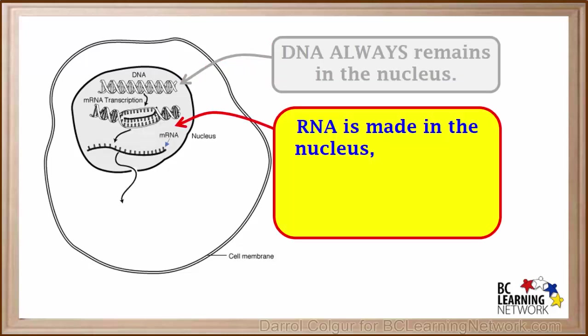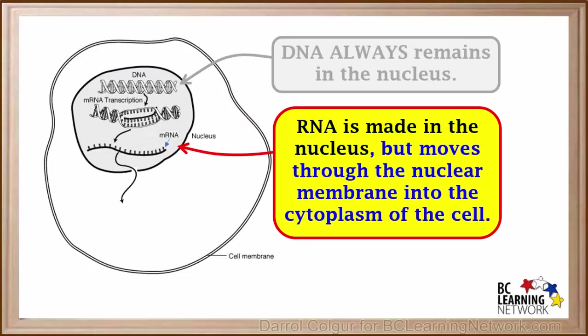RNA is manufactured in the nucleus using a process called transcription. But after it is made and processed, it moves through pores in the nuclear membrane and into the cytoplasm.